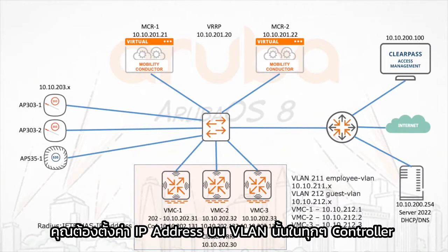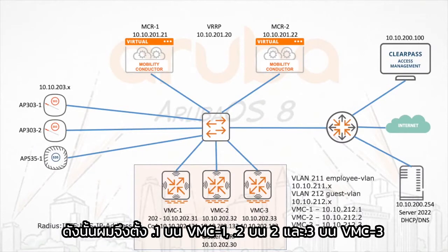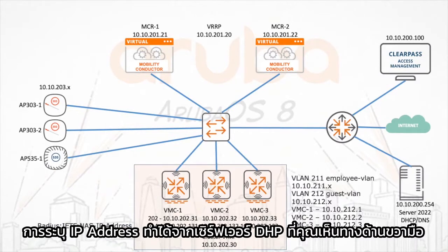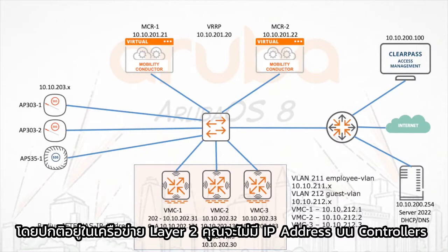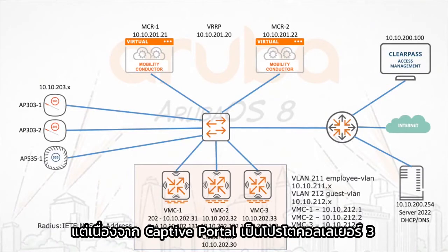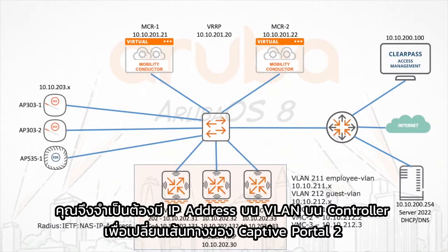You also need to set an IP address on that VLAN on every controller. So I do .1 on VMC 1, .2 and .3 on VMC 3. The IP addressing is done from the DHCP server on the right-hand side. It's a layer 2 type guest network, with the exception that normally on a layer 2 network you do not have an IP address on the controllers. But because captive portal is a layer 3 protocol, you do need an IP address on the VLAN on the controller to redirect the captive portal to.